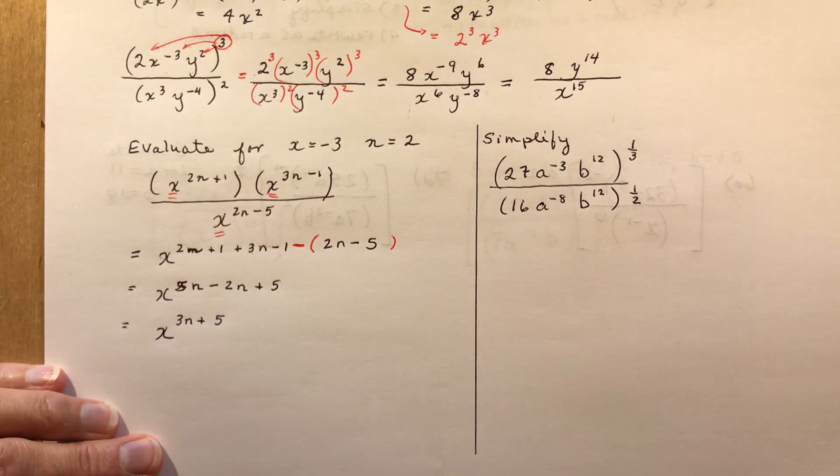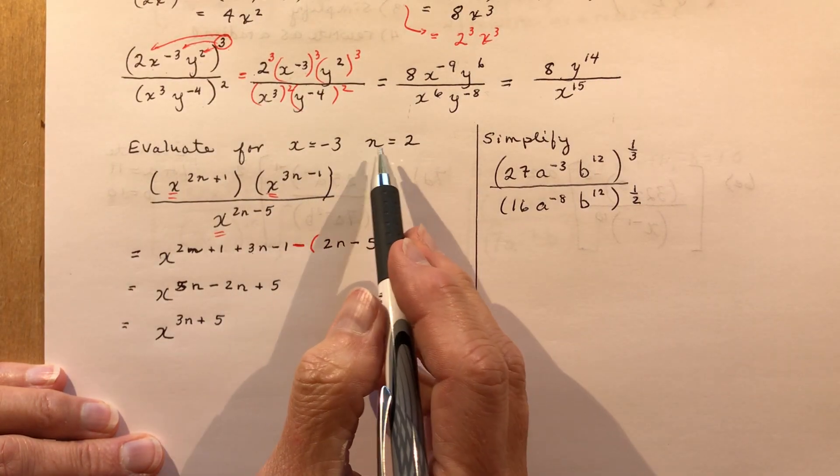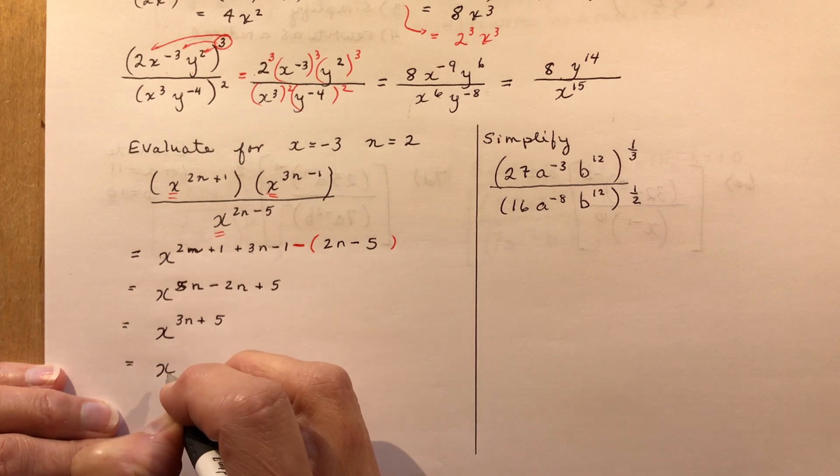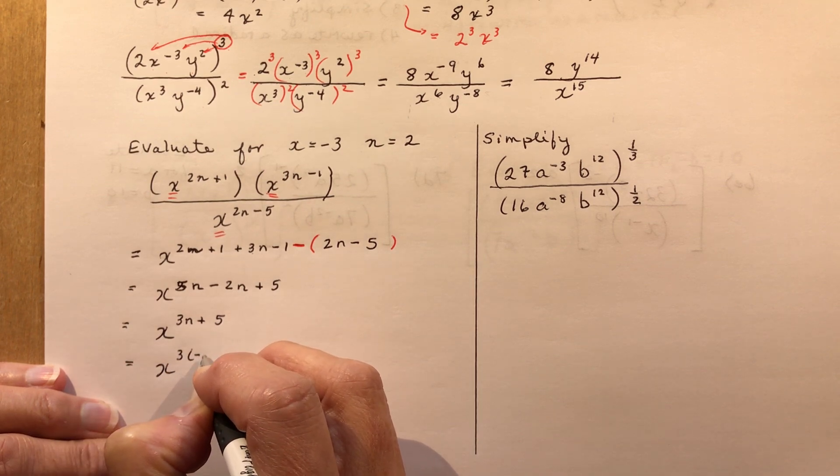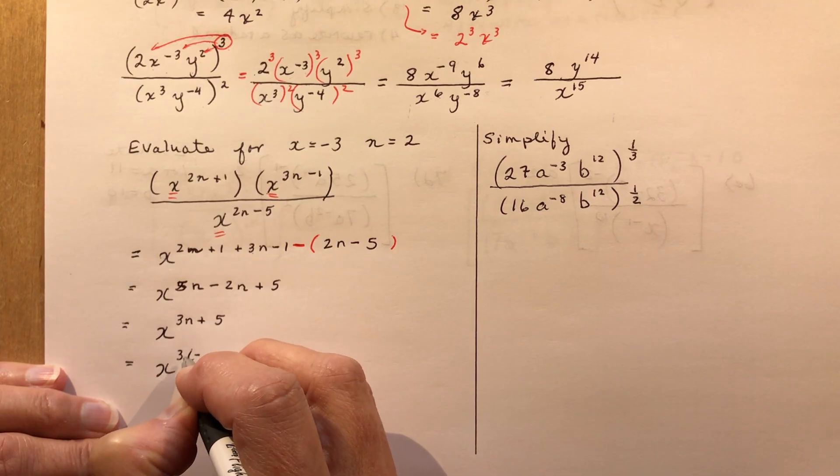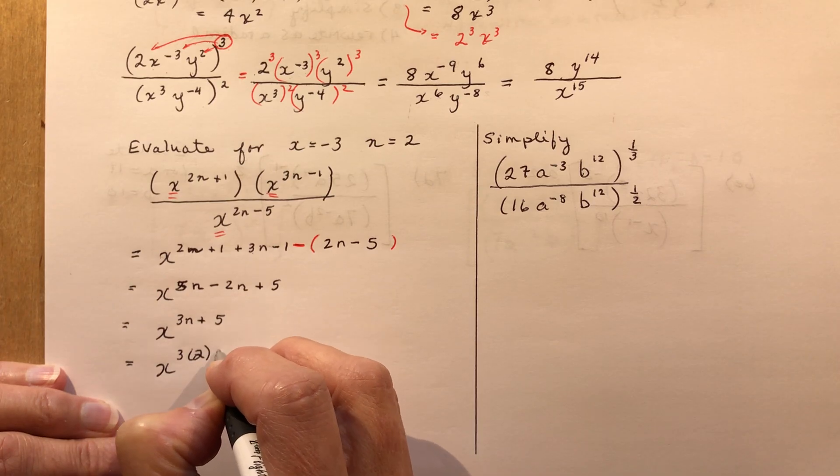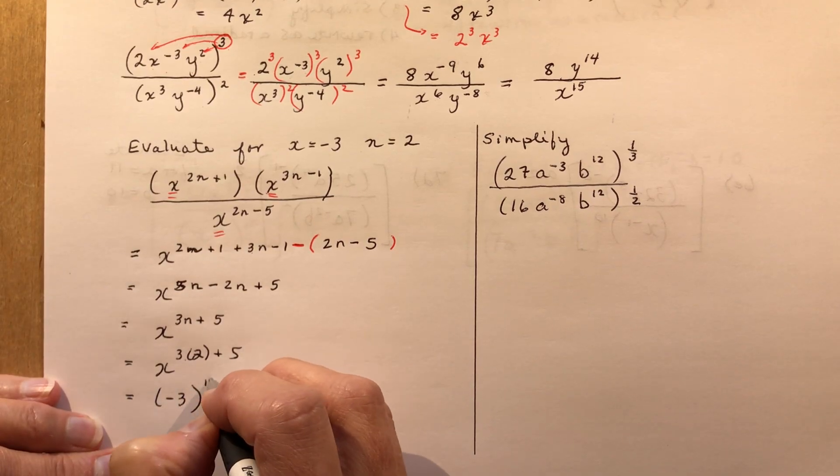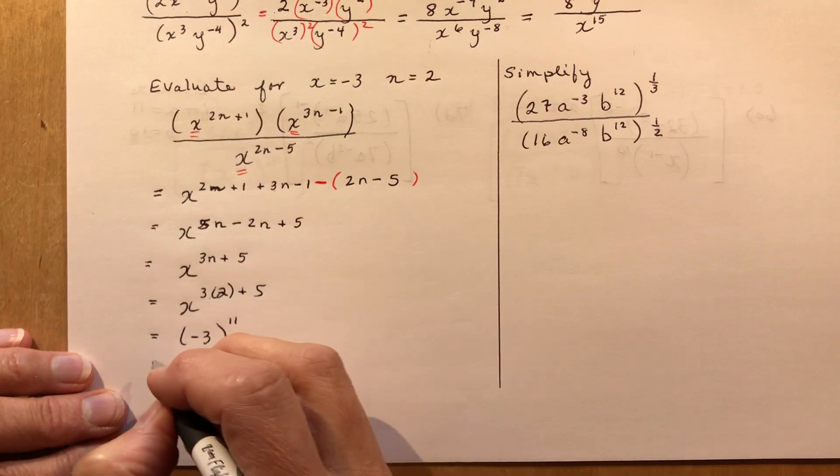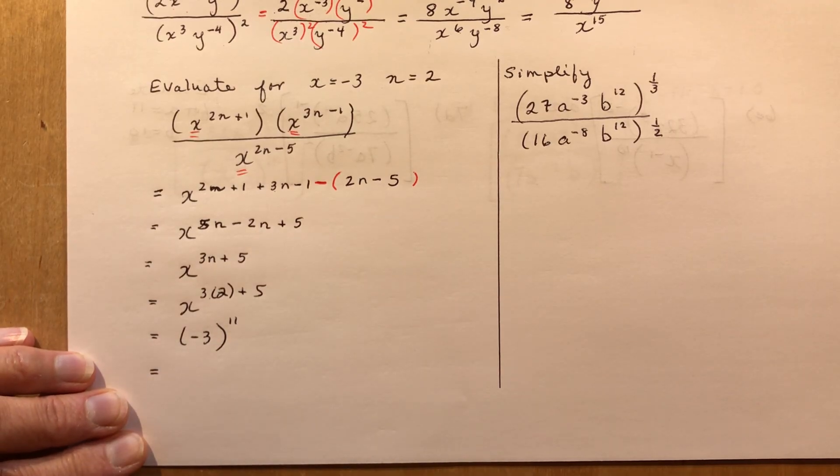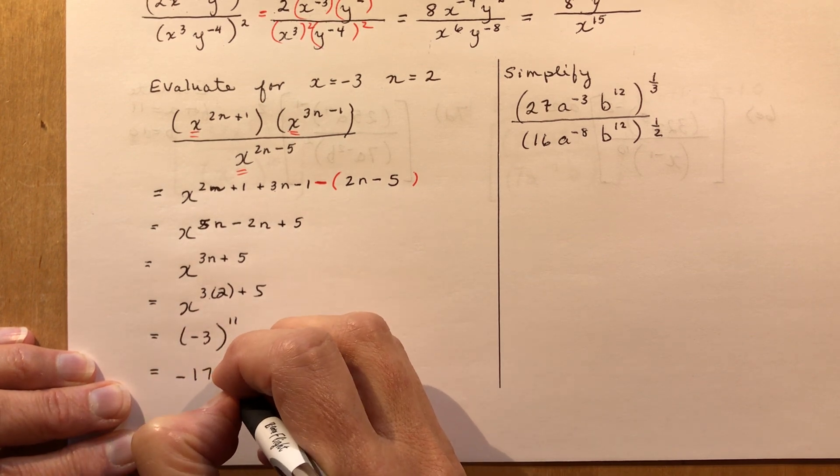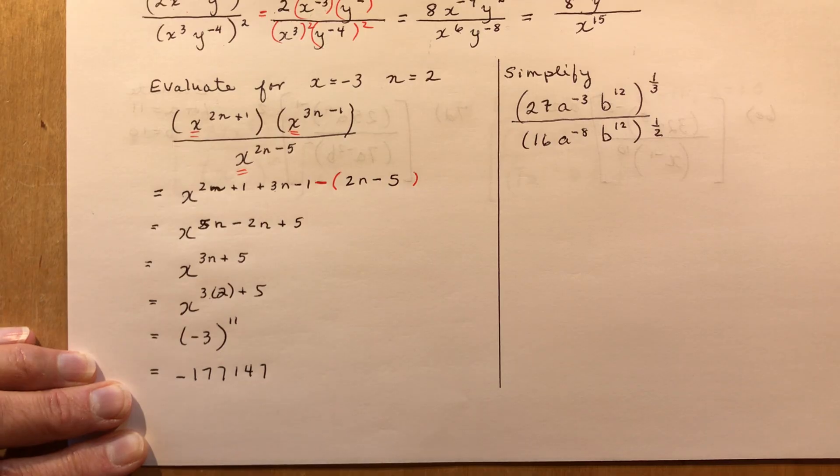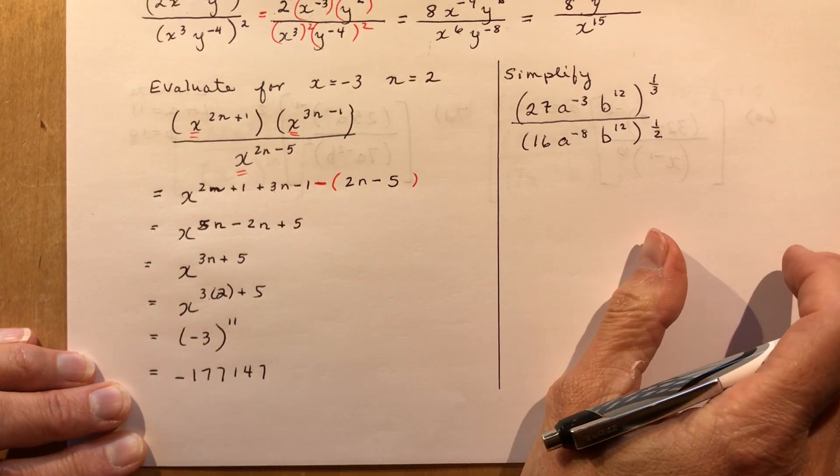And now I can evaluate that for x is minus 3 and n is 2. So that would be x to the 3 times... oh just a minute, sorry. I put the n in. So 3 times 2 here, that's n is 2. And my x has to be minus 3. So I have minus 3 to the power of 6 plus 5 is 11. And minus 3 to the power of 11, well that's when you need to call in a calculator because the answer is something crazy like minus 177,147. So you do that on your calculator.